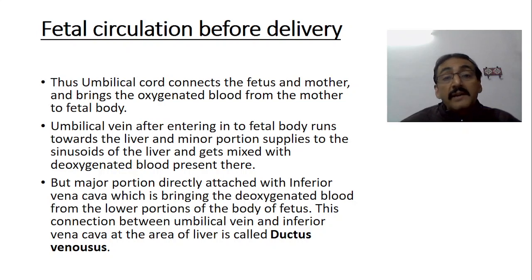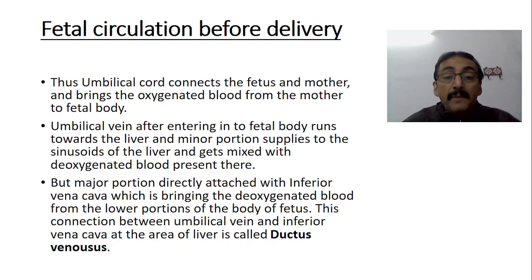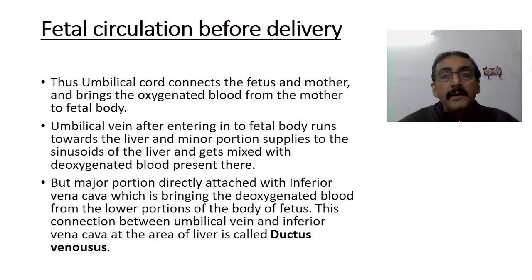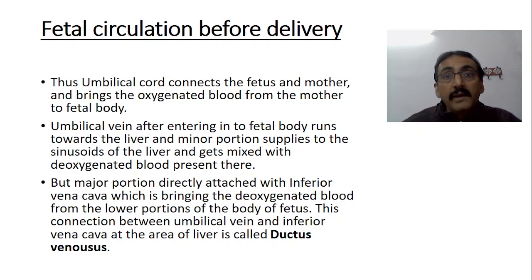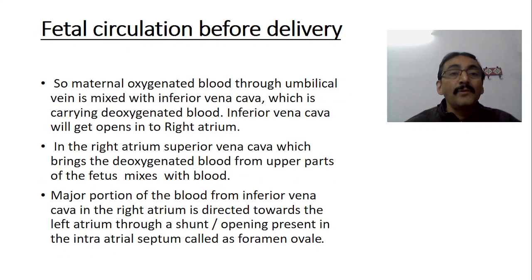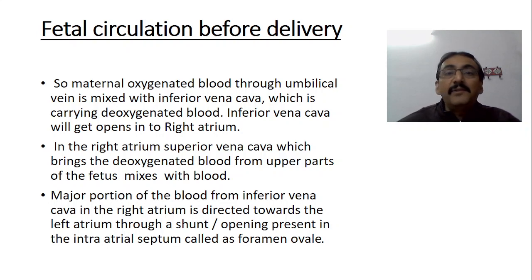The major portion is directly connected with the inferior vena cava, which brings deoxygenated blood from the lower portion of the fetal body. This connection between the umbilical vein and the inferior vena cava at the area of the liver is called the ductus venosus. The umbilical vein also enters the liver, which already contains blood in its sinusoids, and the inferior vena cava bringing impure blood from the lower fetal body also arrives there, so the blood again mixes with impure blood.